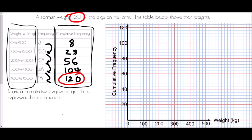One thing to notice is that we have a group, so where do we plot our points? We have a couple of options: we could plot at zero (the start of the group), at 100 (the end of the group), or at 50 as the midpoint. The important thing with cumulative frequency diagrams is we always use the upper value of the group. The reason is that a cumulative frequency diagram says there are eight pigs who are 100 kilograms or less, 28 pigs who are 200 kilograms or less, and so on.